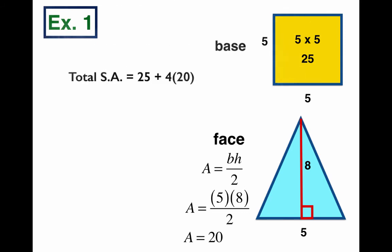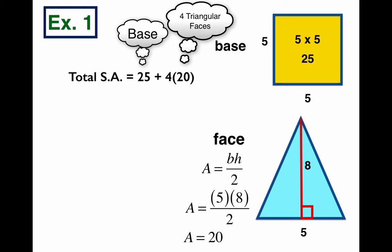So our total surface area is the base, 25, plus 4 of the triangular faces - 4 times 20. Now that math we can add up quickly is 105. So because we were measuring, I think it was inches, we're going to write inches squared, and that is going to be our solution.